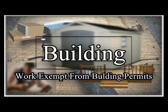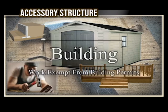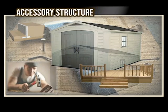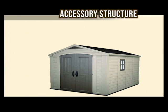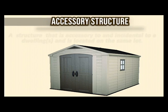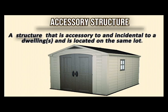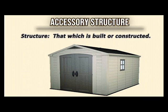On this segment, I cover in-depth accessory structures, retaining walls, decks, and other elements. It is important to understand how the code defines accessory structures. There is often confusion about types of work and types of structures that are exempt. The code defines an accessory structure as a structure that is accessory to and incidental to a dwelling and is located on the same lot. A structure is defined as that which is built or constructed.